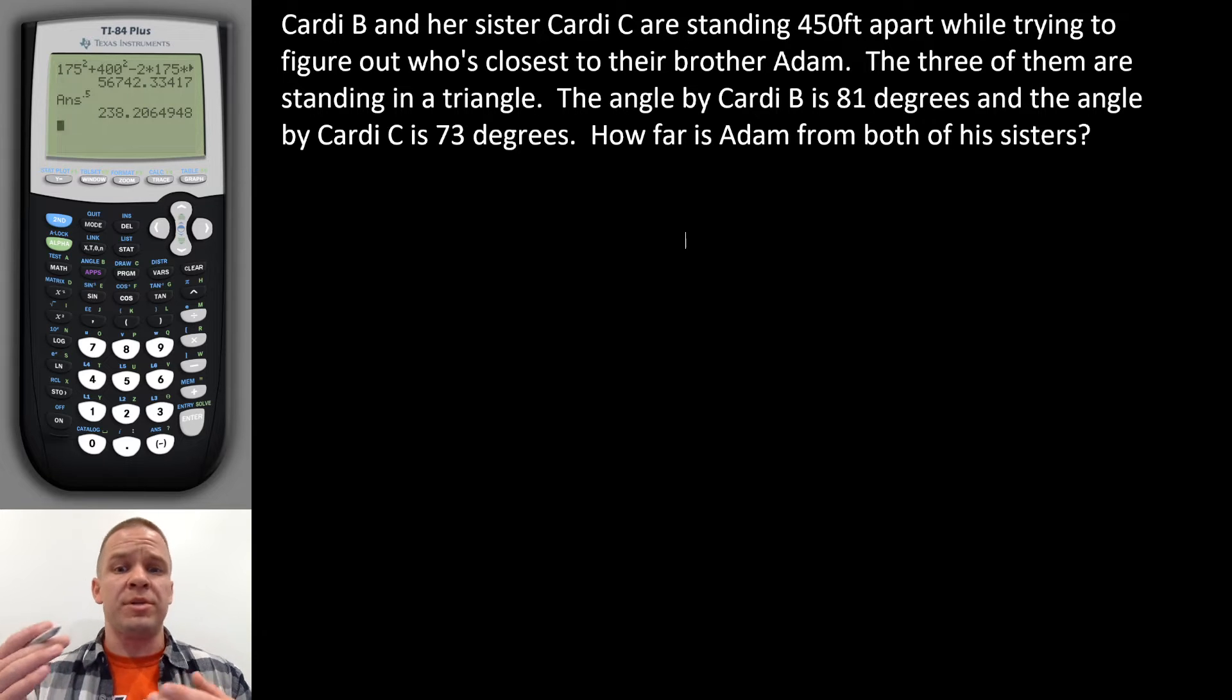The angle by Cardi B is 81 degrees and the angle by Cardi C is 73 degrees. Some might say the angle from Adam to Cardi B is 81, the angle from Adam to Cardi C is 73. Different ways to word it. How far is Adam from both of his sisters?